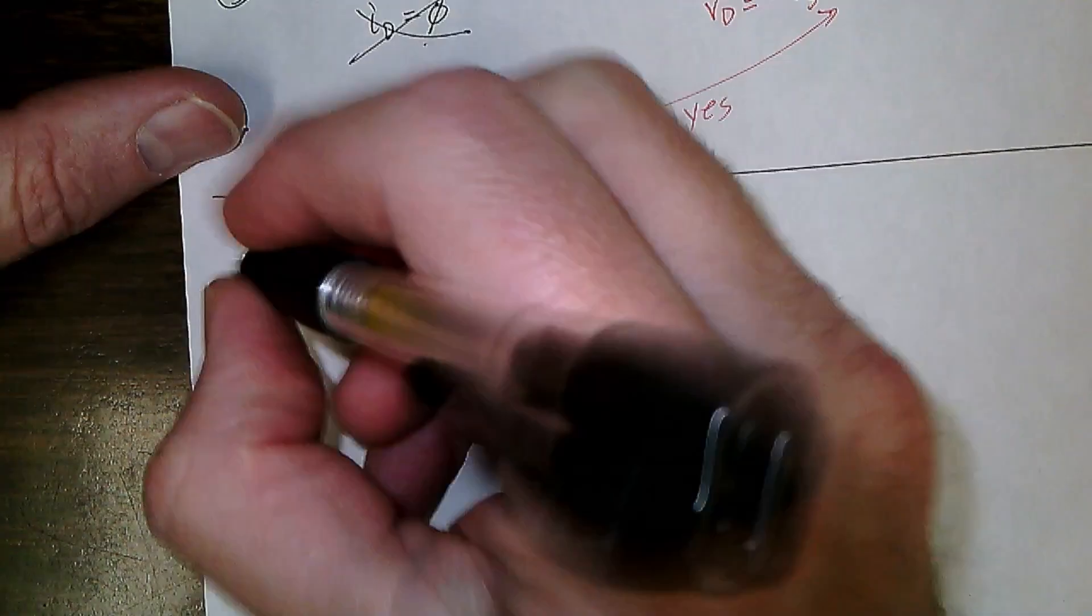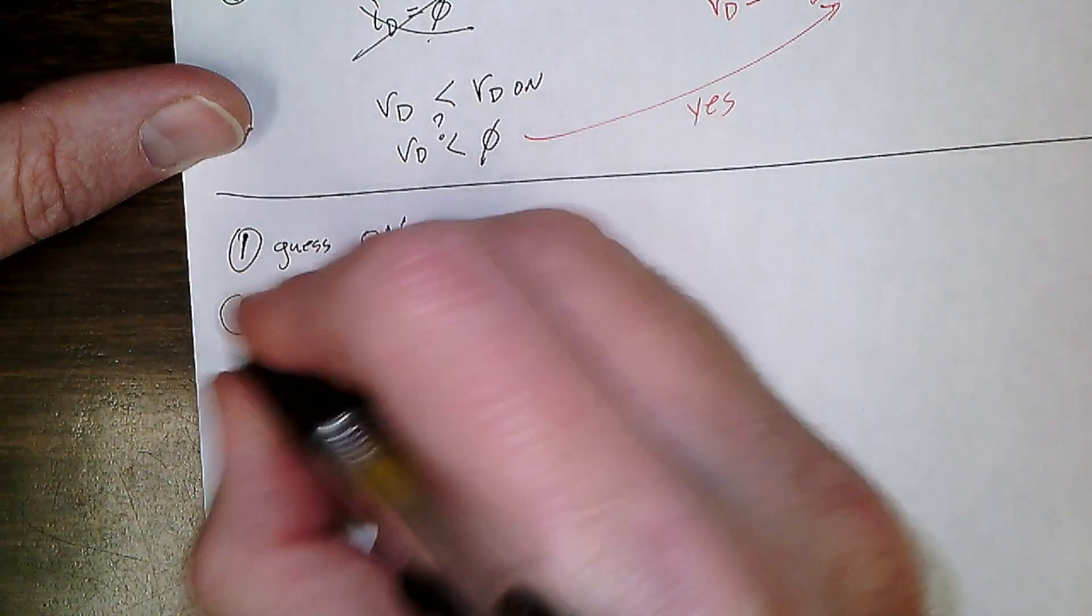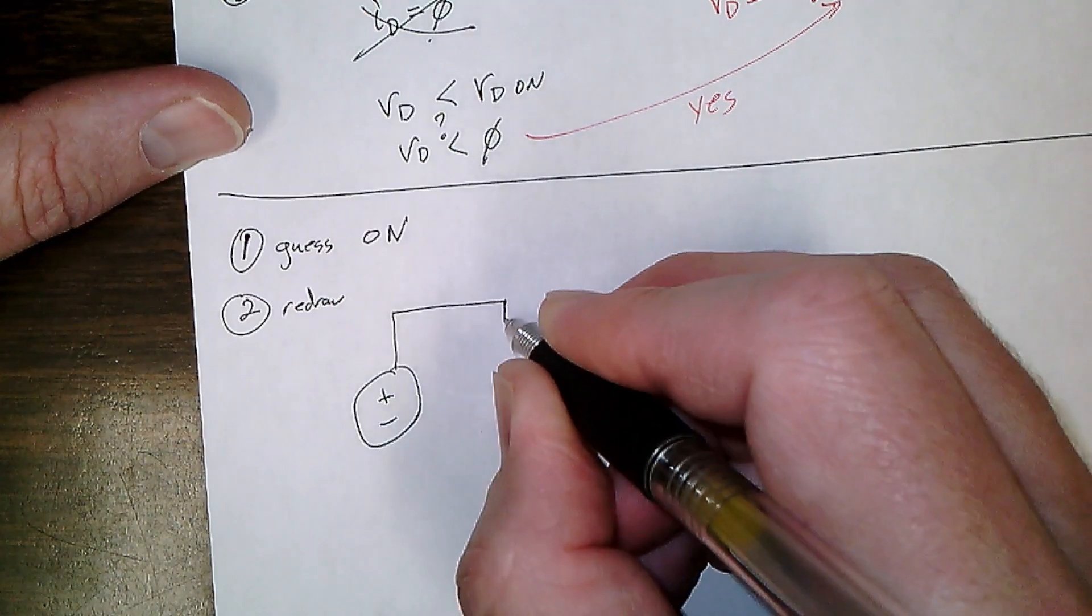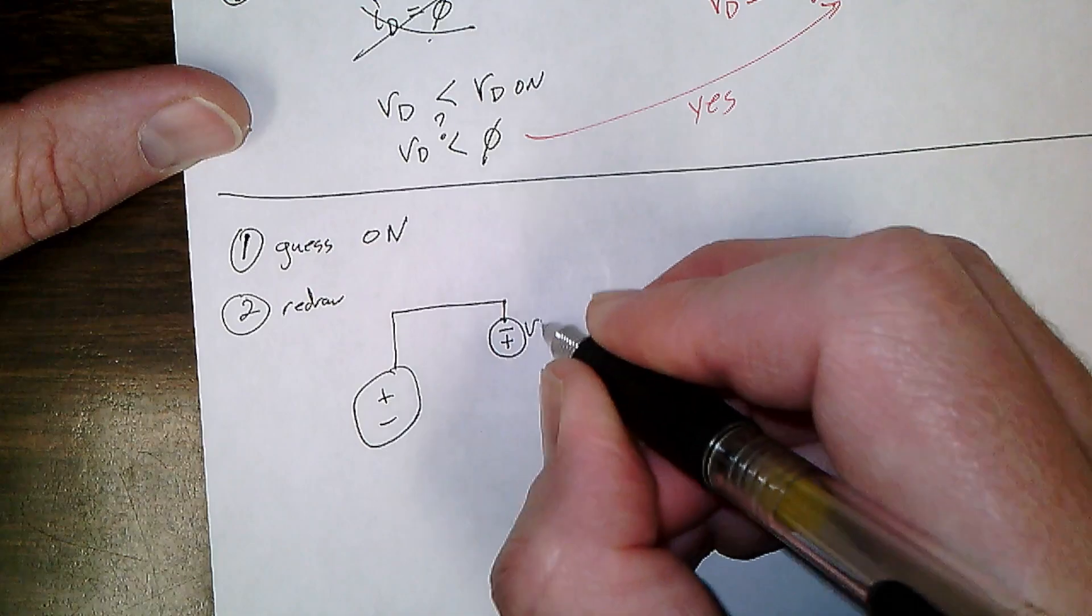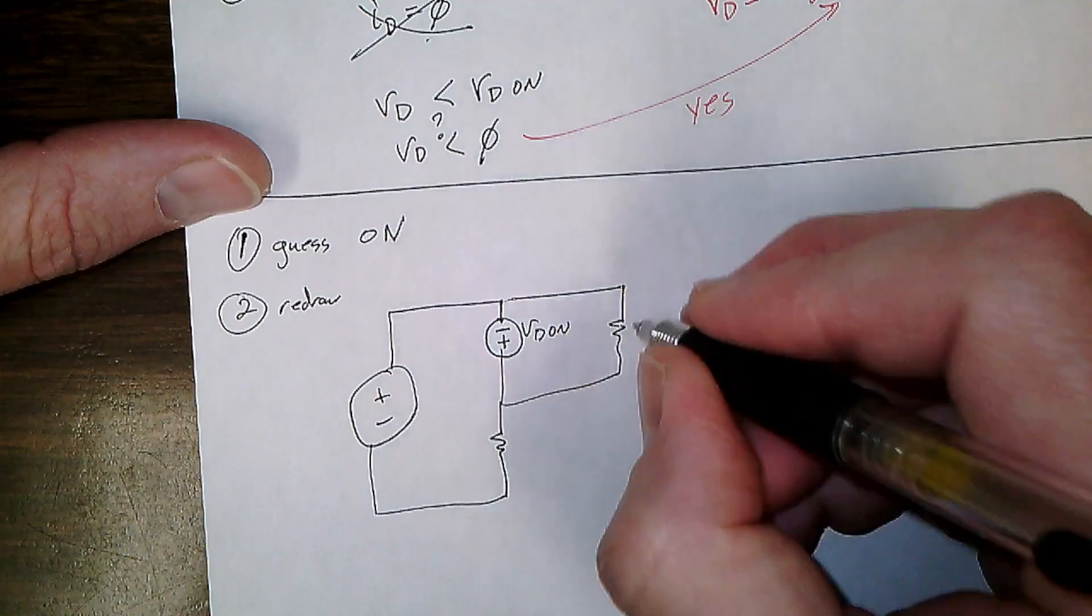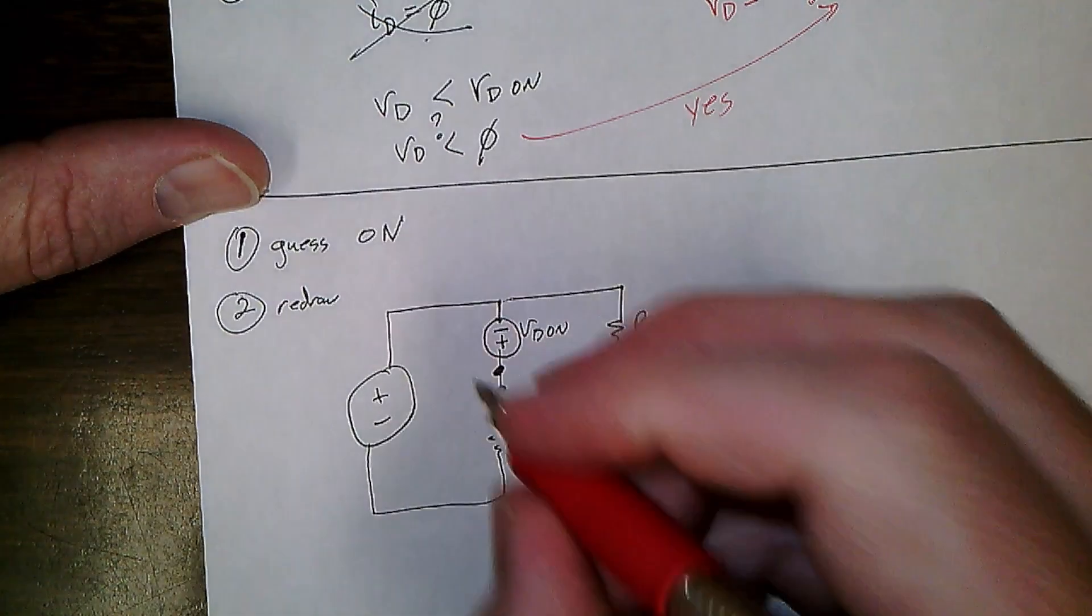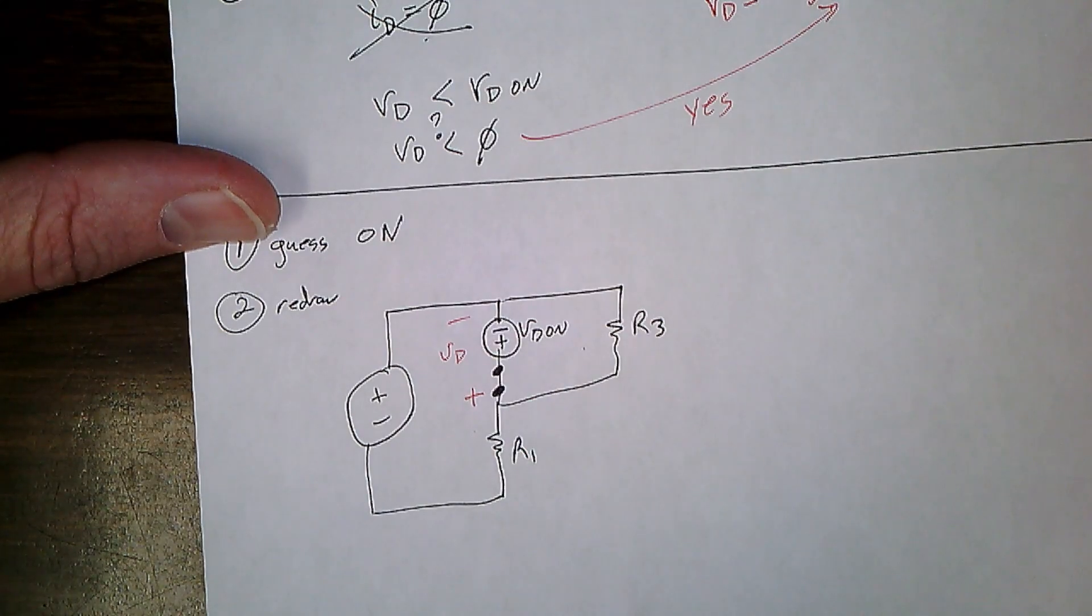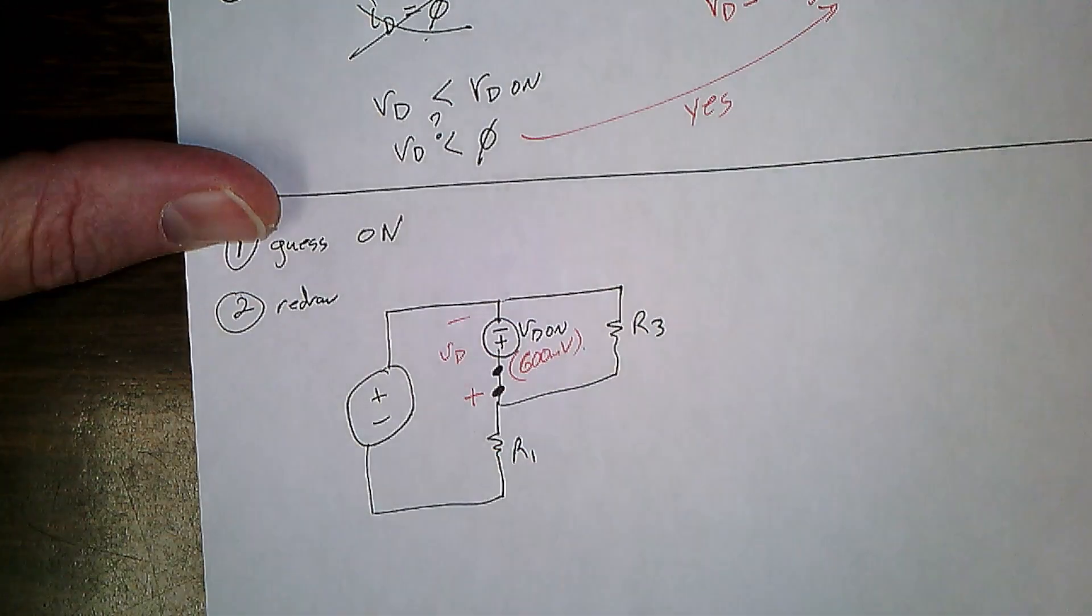Let's redo this circuit. Let's guess wrong, just to see what happens. We guess on. My switch that's on, remember, that's VD. VD is equal to VD on, and we'll say that's 600 millivolts. An assumption.